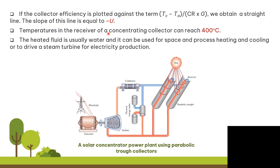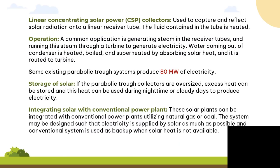The temperature in the receiver of a concentrating collector can reach up to 400 degrees. Linear concentrating solar power (CSP) collectors are used to capture and reflect solar radiation to a linear receiver tube. The fluid contained in the tube is heated — a common application is generating steam in the receiver tubes and running this steam through a turbine to generate electricity. Water coming out of the condenser is heated, boiled, and superheated by absorbing solar heat before being routed to the turbine. Some existing parabolic trough systems produce 80 megawatts of electricity.